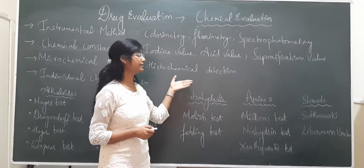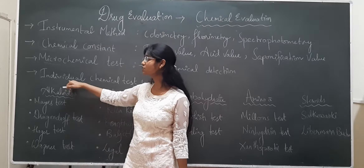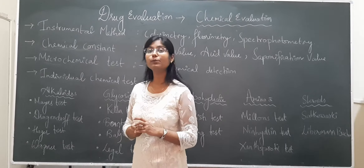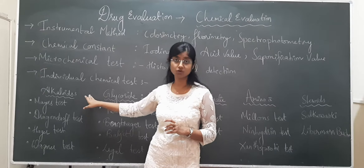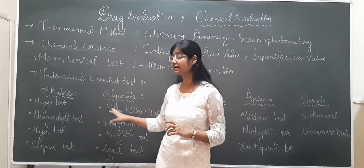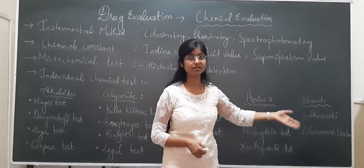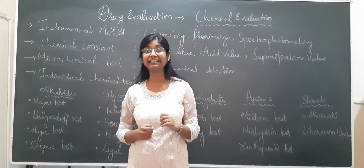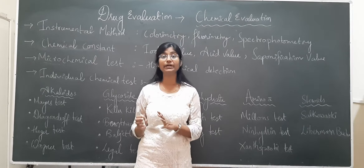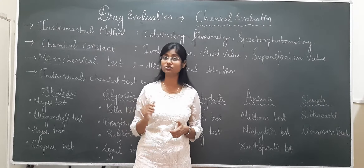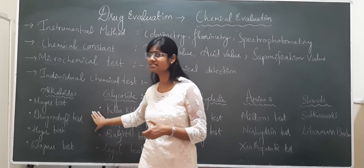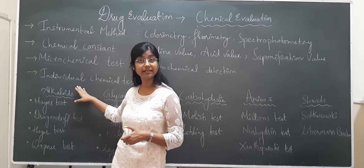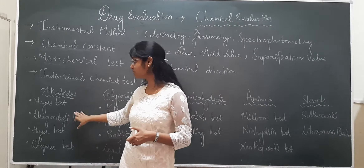Coming to the fourth point: individual chemical test. As I briefly described in the syllabus, we will be dealing with individual categories of phytoconstituents such as alkaloids, glycosides, carbohydrates, amino acids, steroids, terpenoids, and tannins. Each phytoconstituent has specific tests — for example, if it is an alkaloid, a specific test is done for that drug. For your answer purpose, under drug evaluation, just memorize these test names. For alkaloids, the tests include Mayer's test, Dragendroff test, Hager's test, and Weidinger test.